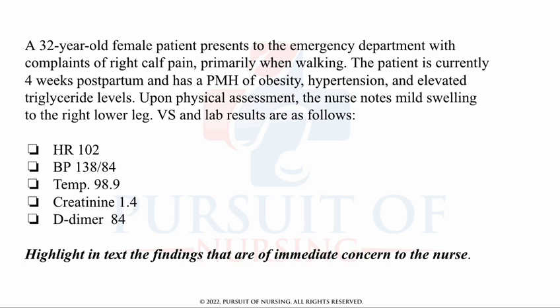The patient's heart rate is 102, BP is 138 over 84, temperature is 98.9, creatinine is 1.4, and D-dimer is 84. Highlight the findings that are of immediate concern to the nurse — just from this sliver of the medical record, identify what findings you would highlight as the nurse.